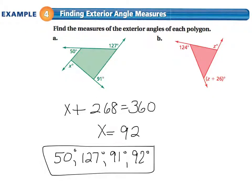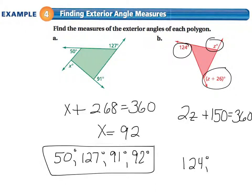In part B, the exterior angle measures are 124, and then we have to find the other two. We know the sum of all of these is equal to 360. So I could do 2z plus 150 equals 360. Subtraction property, 2z equals 210. Z would equal 105. If I plug that in, 105 added to 26 gives me 131. And the other angle measure is z. Well, z is 105.